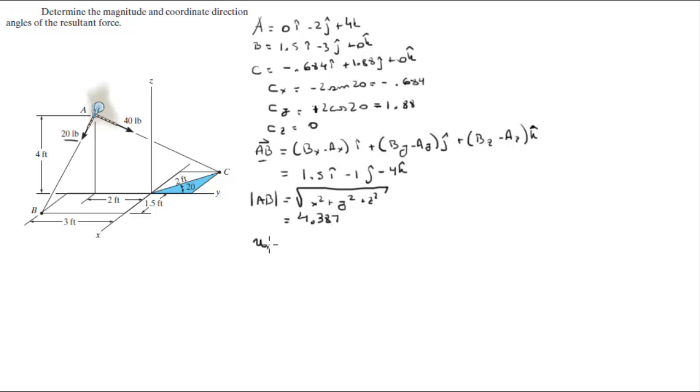Then to find the unit vector AB, this tiny unit vector over here with a magnitude of 1, you divide the vector by the magnitude. And by dividing these three values by this magnitude you're gonna get that the unit vector is equal to 0.342i minus 0.228j minus 0.912k.